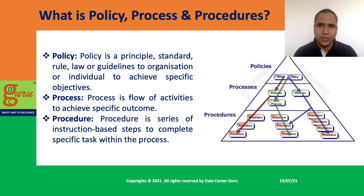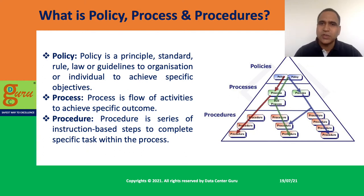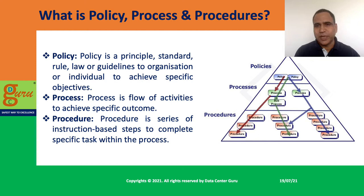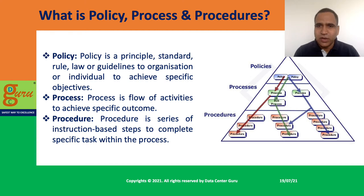Process is something which is a step-by-step instruction-based task you write, making it easier for people to follow. Policy talks about what needs to be followed; process talks about how we follow it — what is the route to it. Procedure is exactly how you are going to follow the detailed instruction-based process. One objective may have multiple policies, one policy may have multiple processes, and one process may have multiple procedures — this complete chain gives you the effectivity and efficiency of an operational sustainability program.